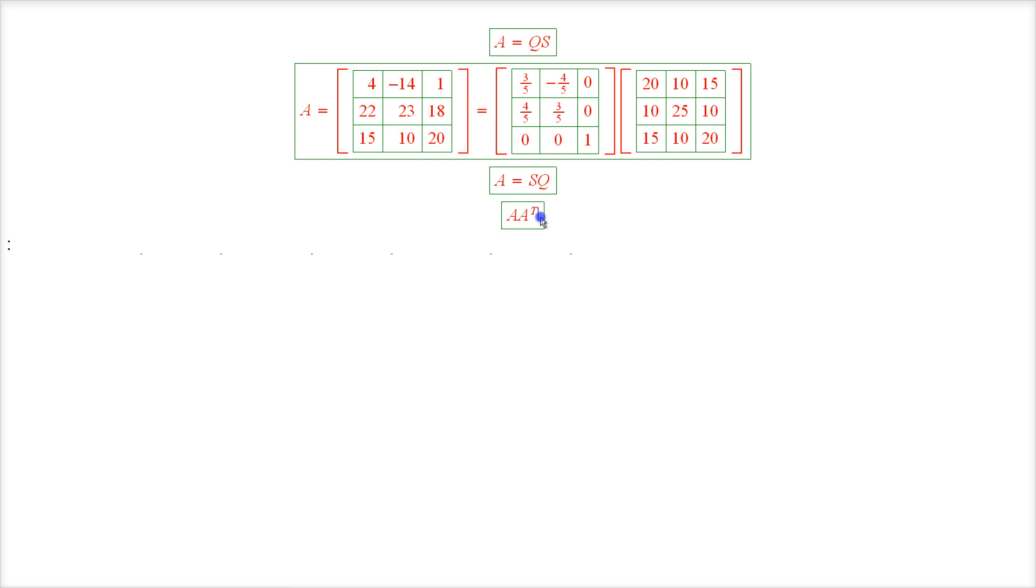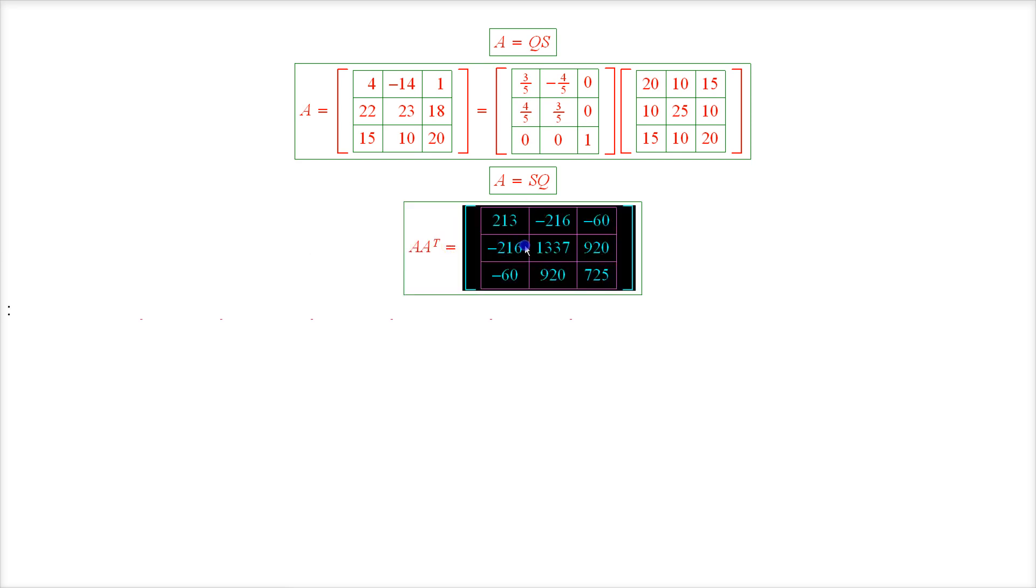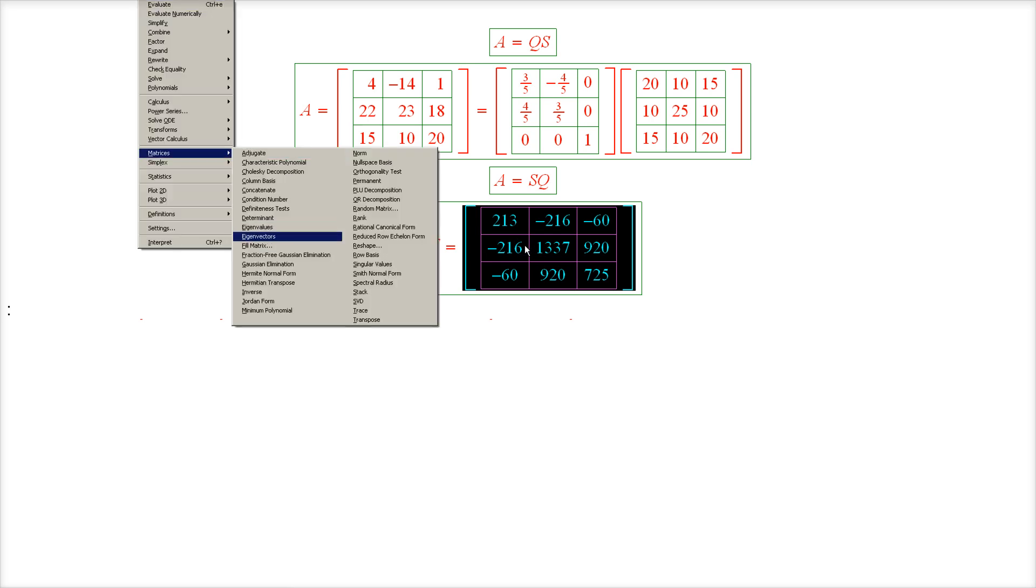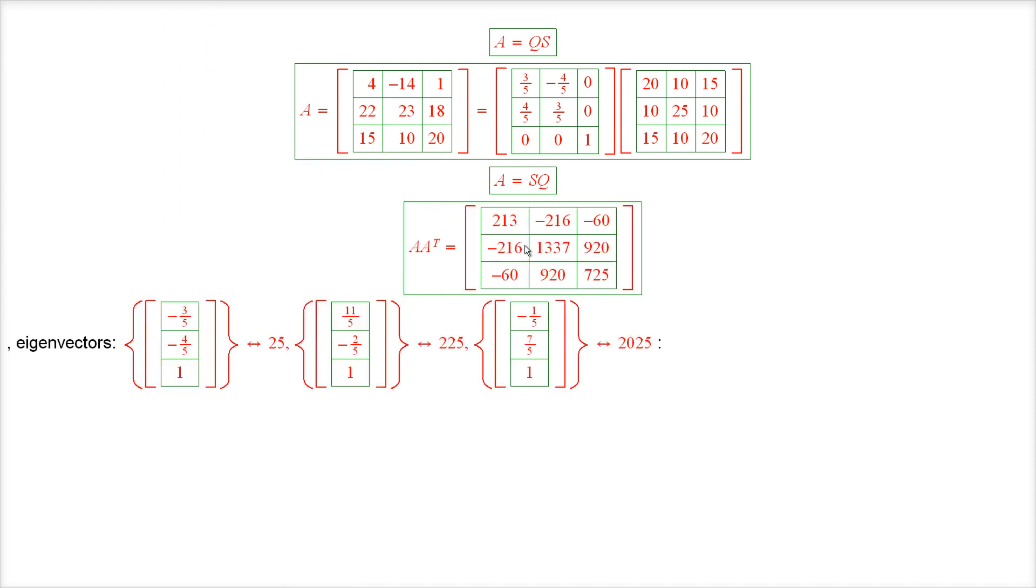And in order to evaluate the matrix S we need to take the square root of this matrix which is done once again through the eigenvalue decomposition. And we have to determine the eigenvectors of this matrix. Of course the eigenvalues are the same but the eigenvectors are different. So the matrix S will be different from what we saw before.